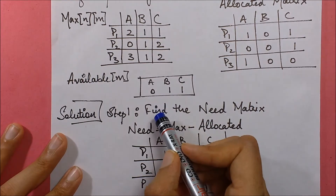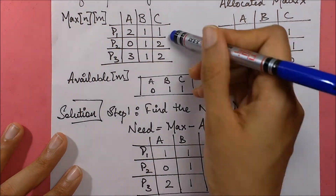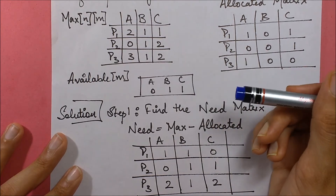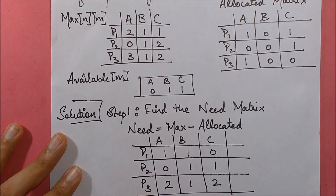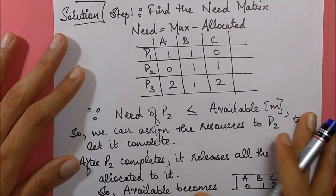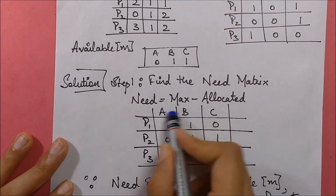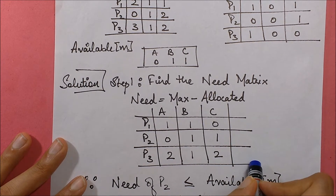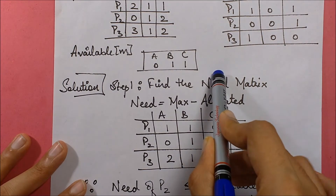The available was [0, 1, 1], so after adding the released resources it becomes [0, 2, 3]. But [0, 2, 3] is still less than the need of all remaining processes, meaning no other process can be allocated resources given this available matrix. Hence, there is no safe sequence available in this case.